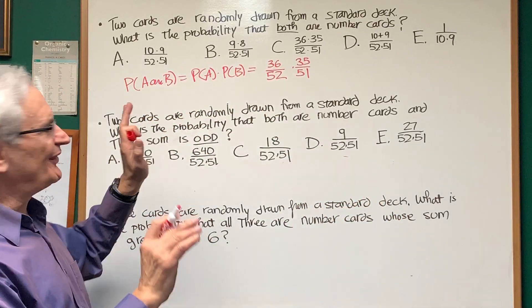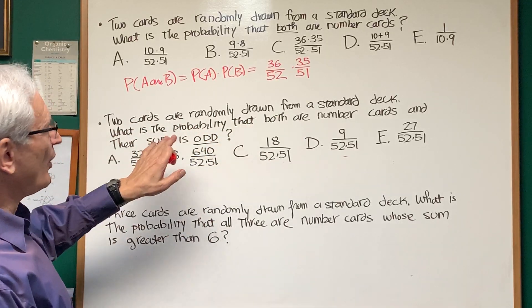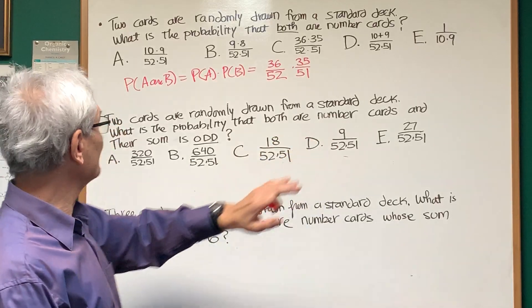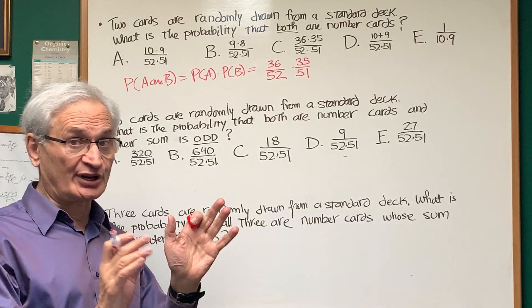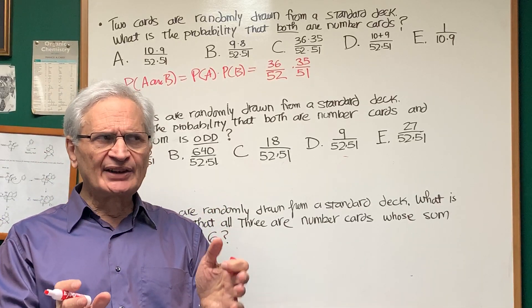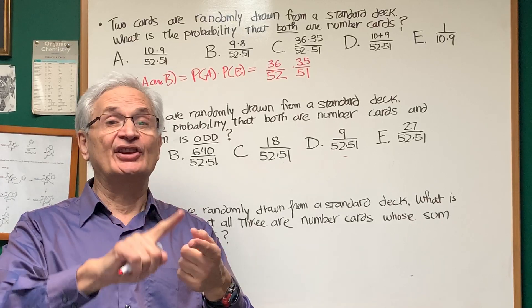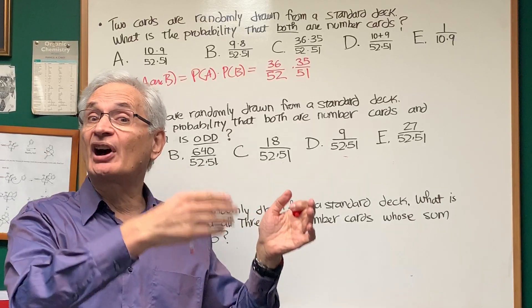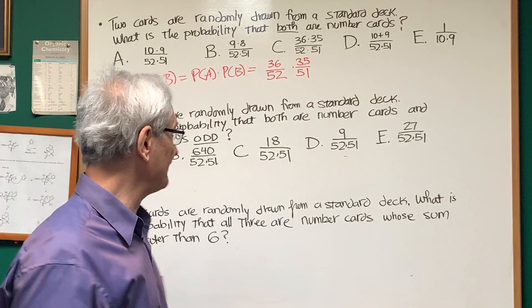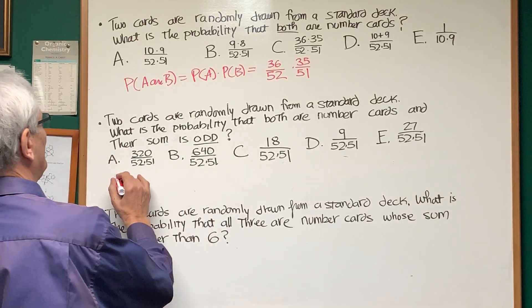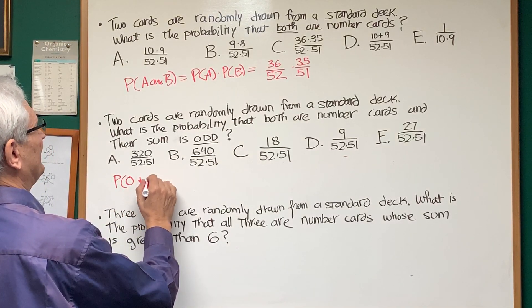Okay, next problem, very similar. Two cards are randomly drawn from a standard deck. What is the probability that both are number cards and their sum is odd? Okay, so we're looking for two number cards. How do I get the sum to be an odd number? One card has to be even, the other card has to be odd, because only odd and even are going to give you an odd number. Odd plus odd is even, even plus even is even.